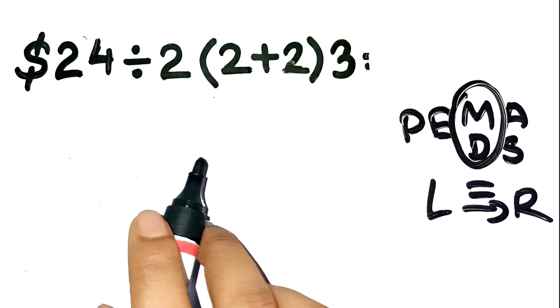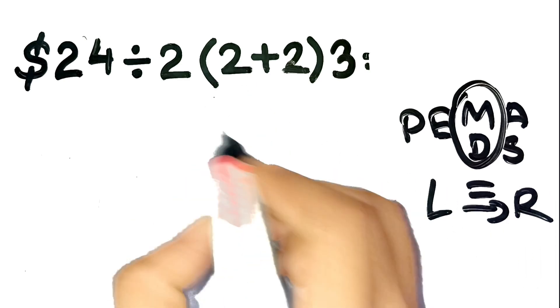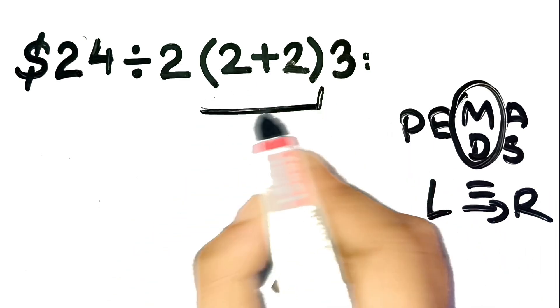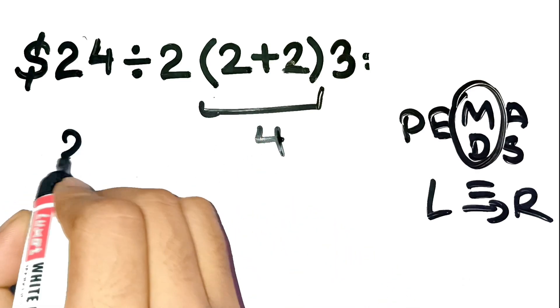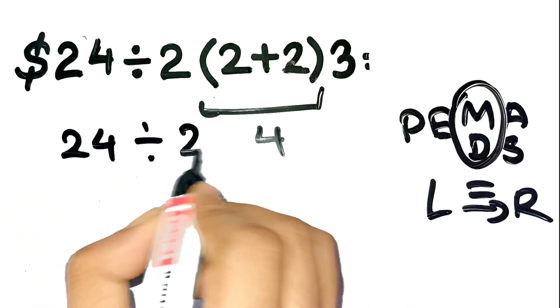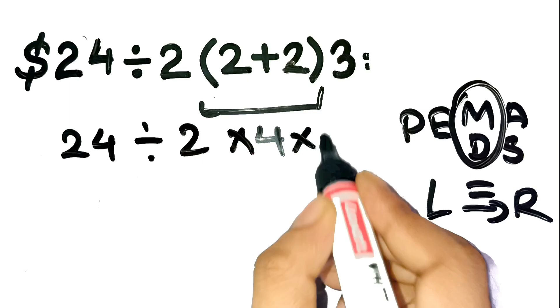So let's do it carefully. Step 1: Inside parentheses, 2 plus 2 equals 4. Now the expression becomes 24 divided by 2 times 4 times 3.